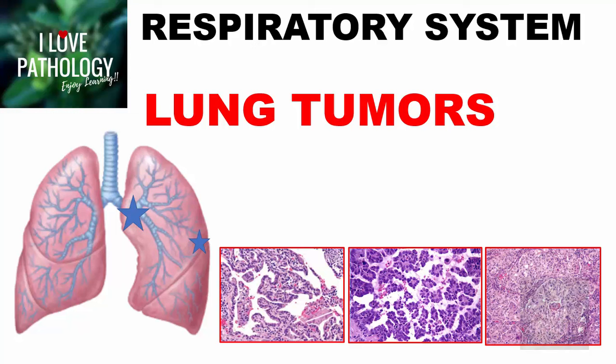Hello everyone, welcome to this short tutorial from Pathology Made Simple at I Love Pathology. This is part 2 of a two-part series on lung cancer. In this part we will be discussing the morphology and clinical features of lung cancers, and a bit about neuroendocrine tumors. In part 1, I discussed the epidemiology, etiopathogenesis, and precursor lesions of lung cancers.